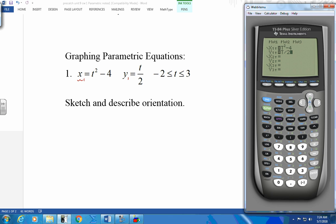So we're going to put in t squared minus 4 and y equals t over 2. Now we're going to go to your chart from negative 2 to 3.